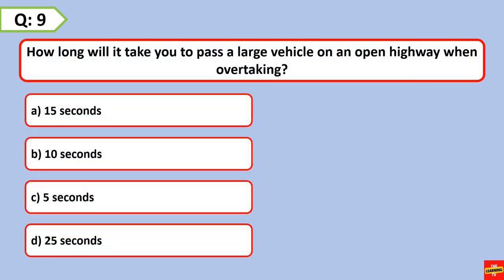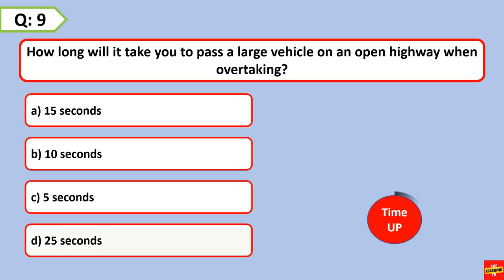How long will it take you to pass a large vehicle on an open highway when overtaking? 25 seconds.